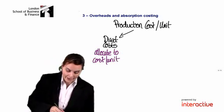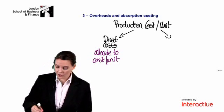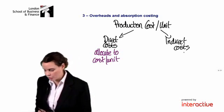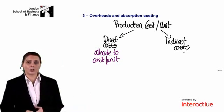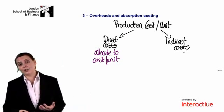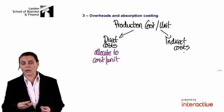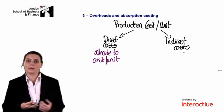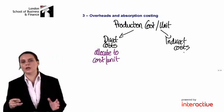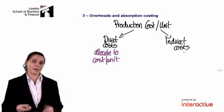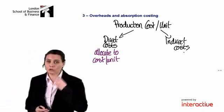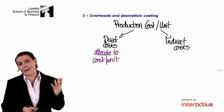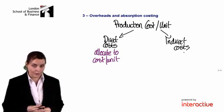The problem we have is with our indirect costs — our indirect production costs like factory overheads including rent, power costs, phone bills, insurance costs, and our indirect labour costs at the factory. With these, we don't know what the cost per unit is. So we have to go through a four-step process in order to estimate the overhead cost per unit.